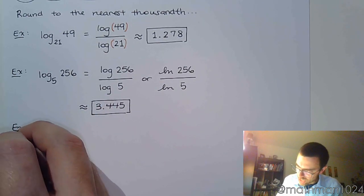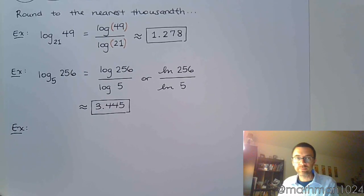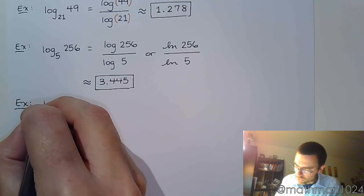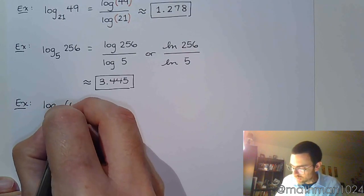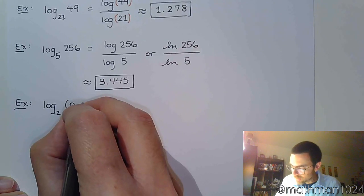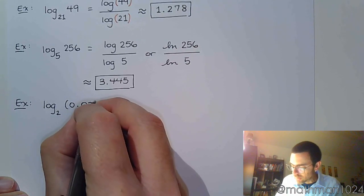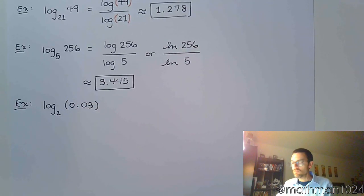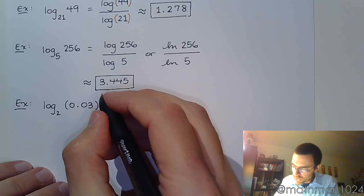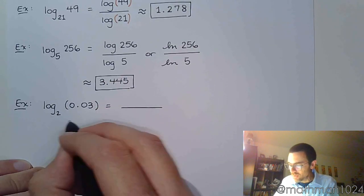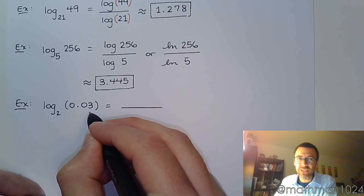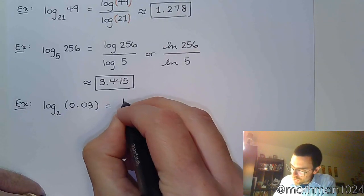One last example and then we're going to get to some fun stuff. Let's do log base 2 of 0.03. Well, just like we've done before, 2 to a power is not going to give you 0.03, at least not nicely. So we're going to do the change of base theorem.